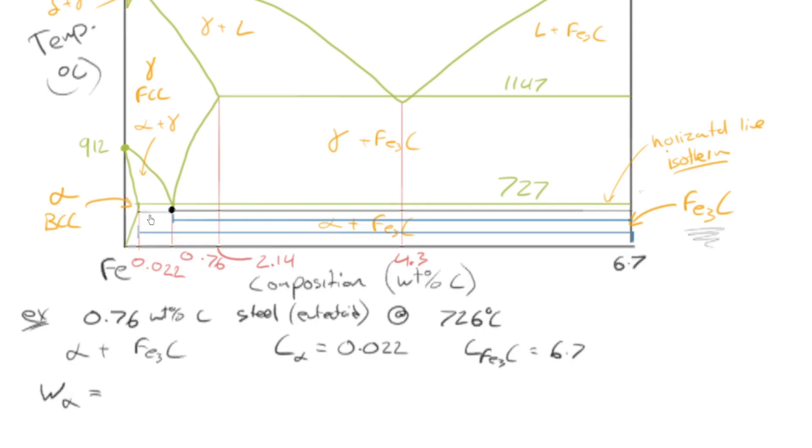you've probably just taken the wrong side of the lever. So the weight fraction of the alpha phase then must be 6.7 minus 0.76 over 6.7 minus 0.022.